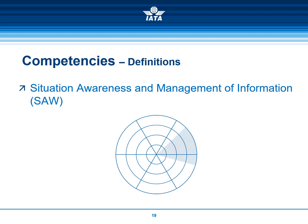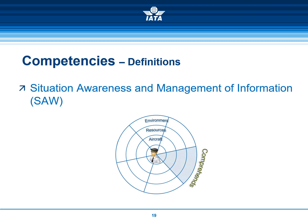To introduce Situation Awareness and Management of Information, we use the image of a radar. The pilot is at the centre, with circles representing the aircraft, resources, ATC, time, and the environment. The scanning is performed by pilots to achieve situation awareness. For example, if the weather at destination is close to minima: the pilot reads the METAR — he perceives; he realizes the approach may be challenging — he comprehends; he seeks information about alternate airports — he anticipates.